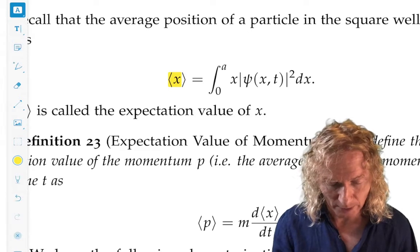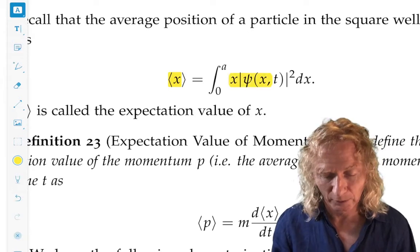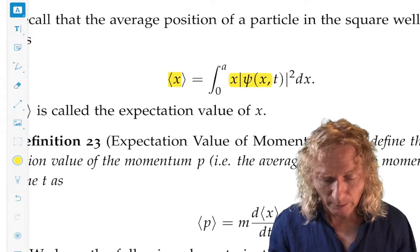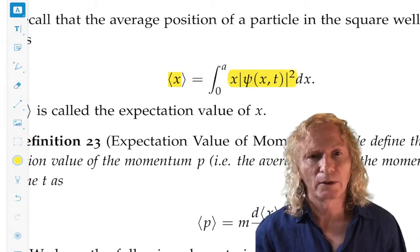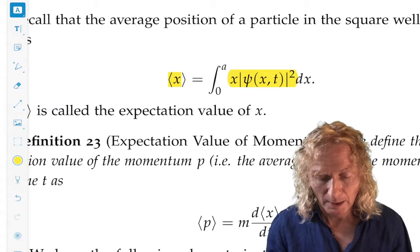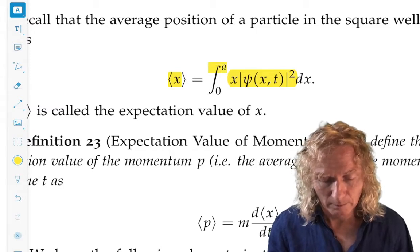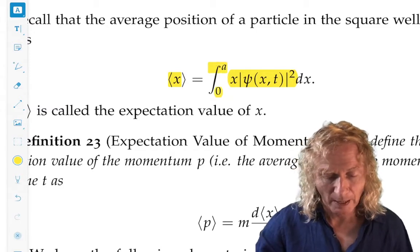We have the position operator, which is just multiplication by x, multiplied by the probability density for the particle to be at position x at time t, integrated over the domain. That's the average position.